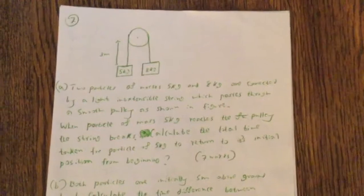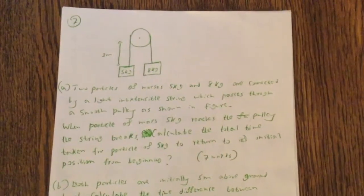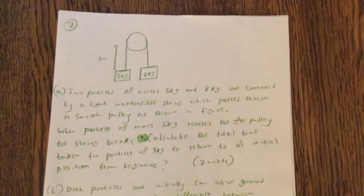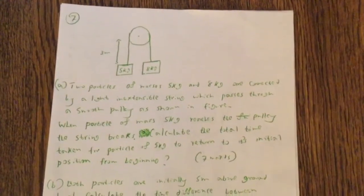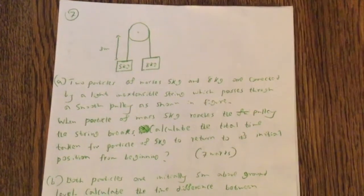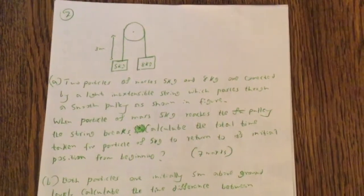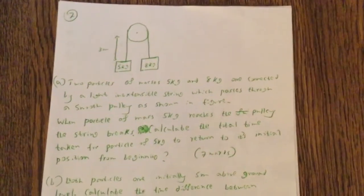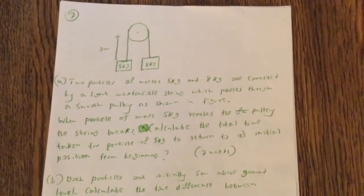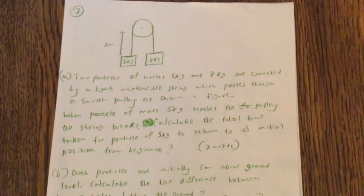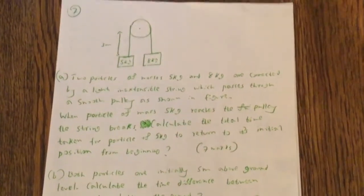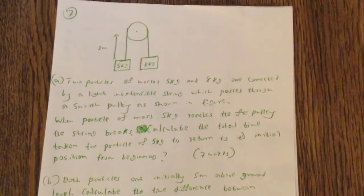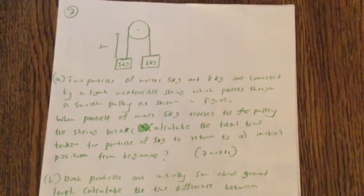Question 7, part A. Two particles of mass 5 kg and 8 kg are connected by a light inextensible string which passes through a smooth pulley as shown in figure. Question A, when particle of mass 5 kg reaches the pulley, the string breaks. Calculate the total time taken for the particle of 5 kg to return to its initial position from beginning.